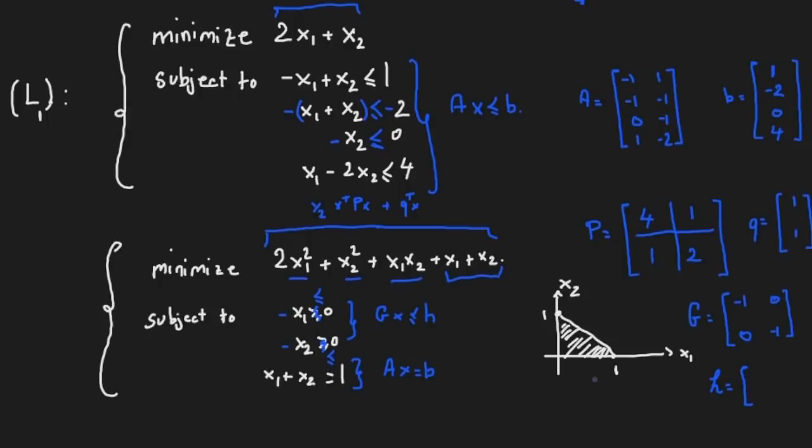Finally you've got one affine equality constraint, so your A over here consists of one row of coefficients, 1, 1, and your b is on your right hand side, so it's a 1.